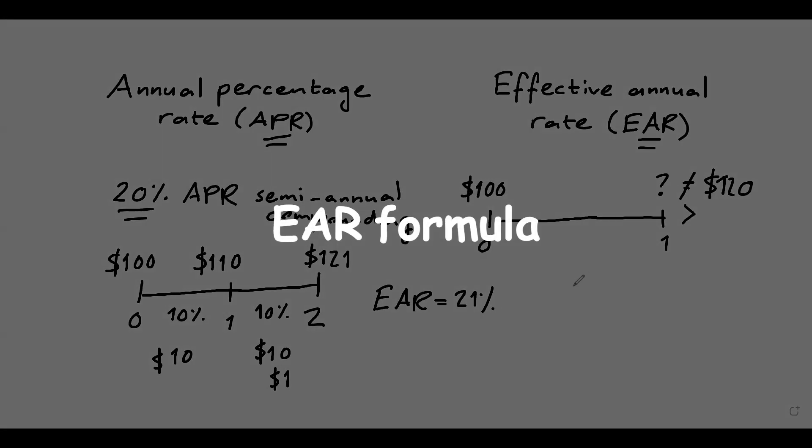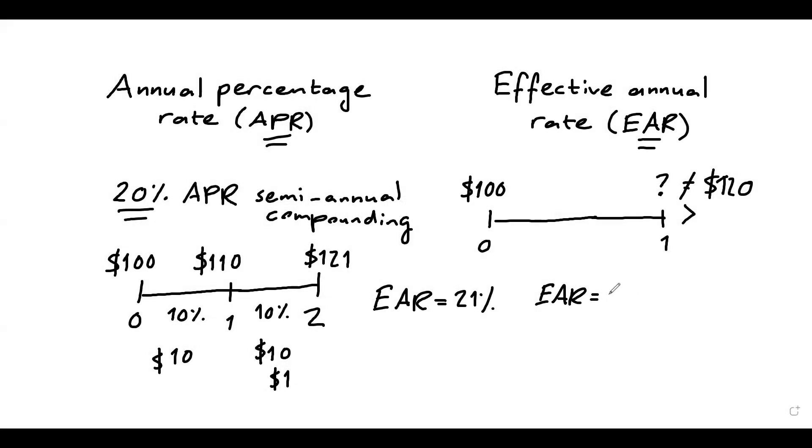And in general, the formula for EAR calculation is that you begin with the APR, so it's 1 plus APR, divided by the compounding frequency. So in this case, this was 2, because there are two periods with semi-annual compounding, to the power m. And you subtract 1.